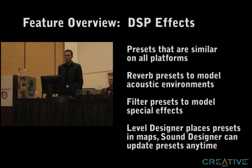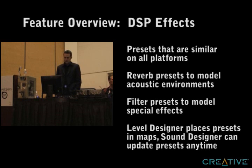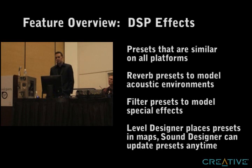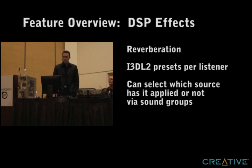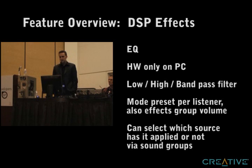We also have filter presets. The reverb presets are used to model acoustic environments — if you're in a cave, a small room, or a large room. Filter presets are global presets as well, but mostly triggered by code. For example, if a grenade goes off next to you, we have a special filter for that; we also have filters for when you die. We support reverb across the board with i3DL2 presets, but since presets are per listener, only one can be active at a time. We support an equalizer — currently hardware-only on the PC — as a low-pass, band-pass, high-pass filter. It affects the loop volume, so it's used for effects like the grenade.